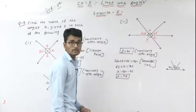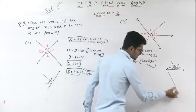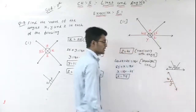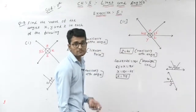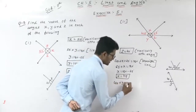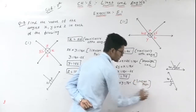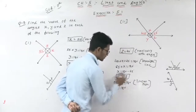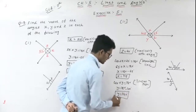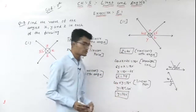Now find the value of Y. There is one straight line divided into two parts: this portion is 40 and this portion is Y. Since it is a linear pair, the sum of angles equals 180. So 40 plus Y equals 180, which gives Y equal to 140 degrees. So: Z = 40, X = 115, and Y = 140 degrees.